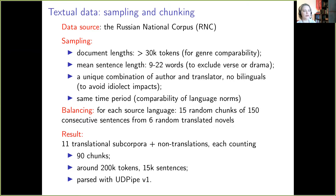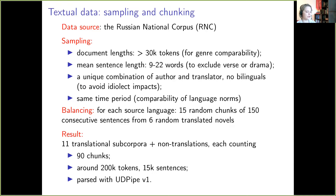The text material selected following these criteria was chunked to produce an equal number of same-size text fragments for each language. As a result, each translational subcorpus and non-translations are represented by 90 chunks of 150 consecutive sentences coming from six randomly selected novels. Each chunk counts around 2,000 tokens. All textual data was annotated with universal dependencies, as we rely on this format for feature extraction.